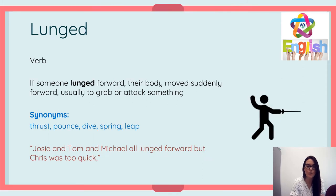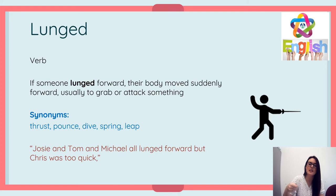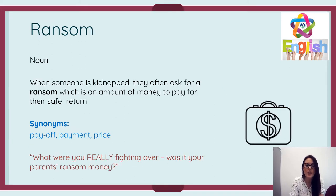Next is the word 'lunged,' which is a verb. If someone lunged forward, their body moves suddenly forward, usually to grab or attack something. You can do a lunge when you're exercising. The picture shows someone fencing — when you lunge it's that instance when you might stab somebody. Synonyms: thrust, pounce, dive, spring, and leap. And finally 'ransom' — when someone is kidnapped they often ask for a ransom, which is an amount of money to pay for their safe return. Now go to your booklet and complete your own sentences using those four words.